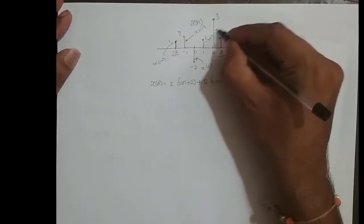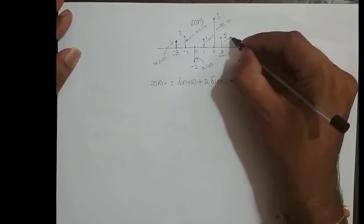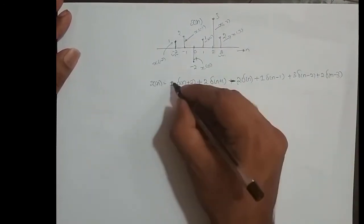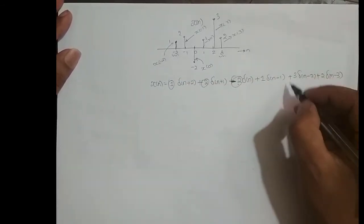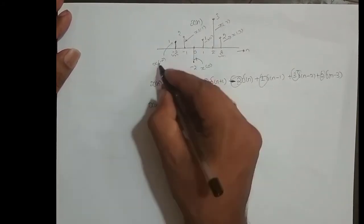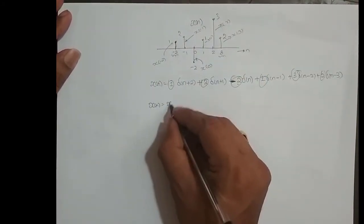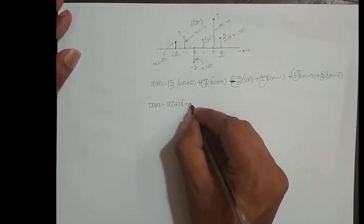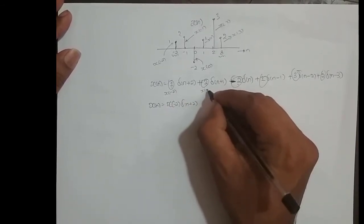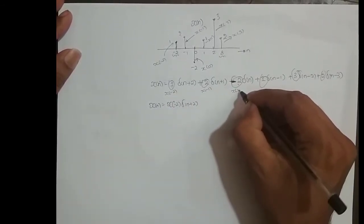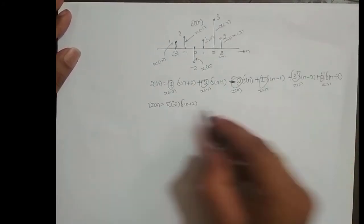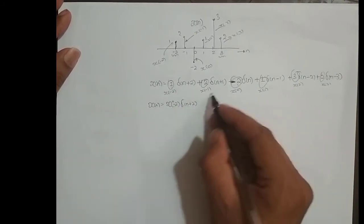This is X of 1, this is X of 2, and this is X of 3. So instead of writing the numeric sample values — 1, 2, minus 2, 1, 3, and 2 — we write the corresponding index notation. So I can write it as X of minus 2 times delta of n plus 2, because this amplitude is X of minus 2.